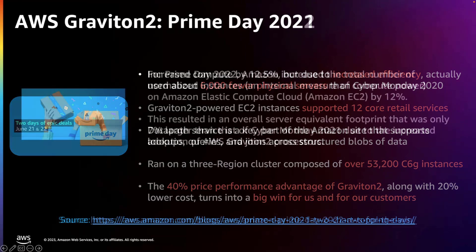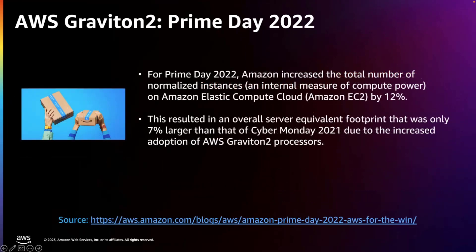Looking at Prime Day 2022, Amazon increased the total number of normalized instances — an internal measure of compute power — EC2 usage by 12%, but this resulted in an overall server equivalent footprint only 7% larger than 2021 because they continued to adopt Graviton. So increased overall compute utilization, but a smaller EC2 overall footprint.